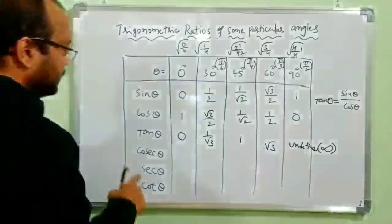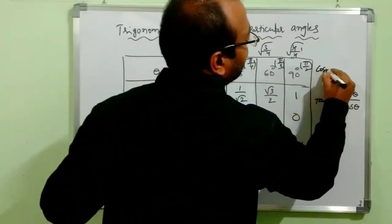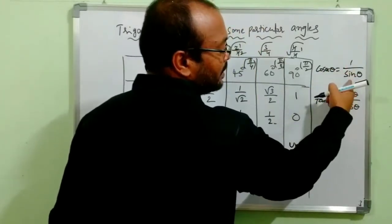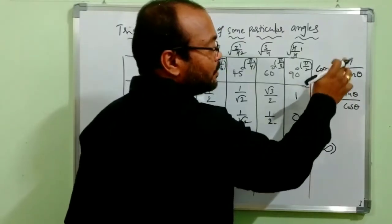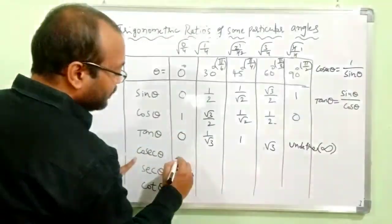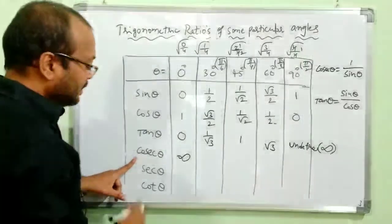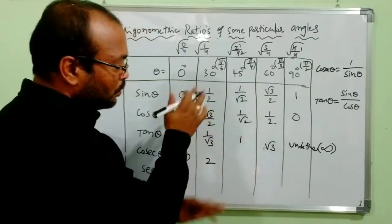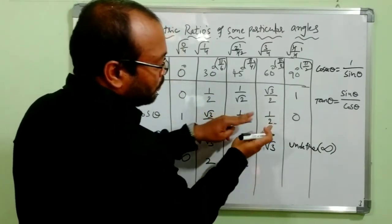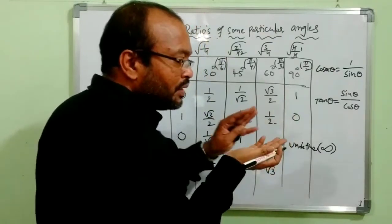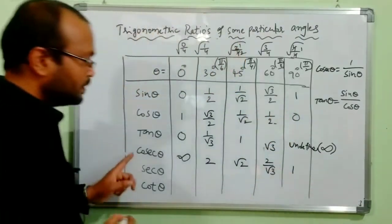Next, cosec. Cosec θ is the multiplicative inverse of sin, meaning cosec θ = 1/sin θ. Using the sin values: cosec 0° = 1/0, which is undefined or infinity. Cosec 30° = 1/(1/2) = 2. Cosec 45° = 1/(1/√2) = √2. Cosec 60° = 1/(√3/2) = 2/√3. Cosec 90° = 1/1 = 1. These are the values for cosec θ.